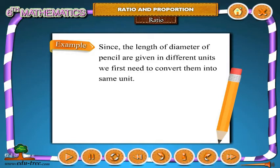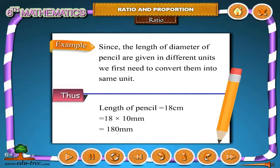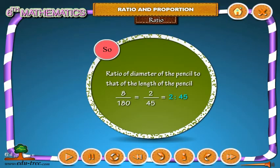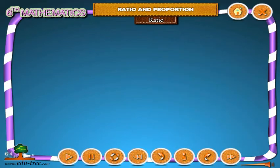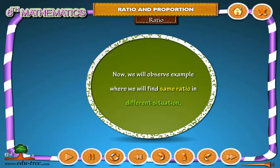Since the length and diameter of the pencil are given in different units, we first need to convert them into the same unit. Thus, length of pencil = 80 centimeters = 8 into 10 millimeters = 800 millimeters. So the ratio of diameter to length of the pencil is 8 by 800, which equals 2 by 45, which equals 2 ratio 45.